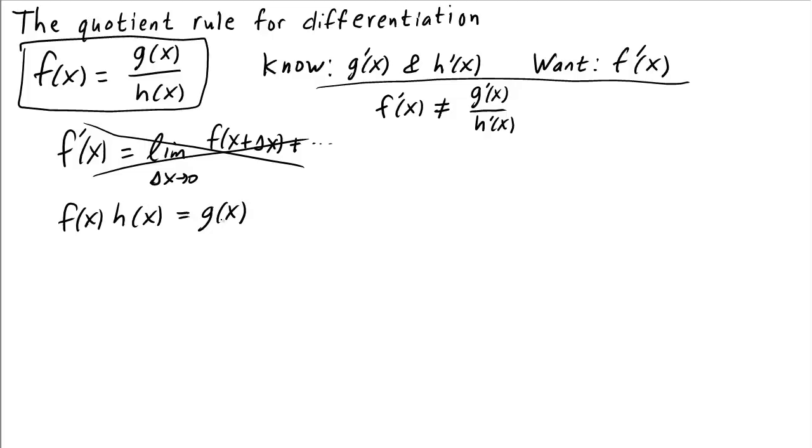If I gave you this relationship among f, g, and h, and asked you to tell me how g prime depended on f prime and h prime, would you know what to do? If you are familiar with the product rule, then I hope you would. We've reduced the new quotient problem to the previously solved problem of finding the derivative of a product.